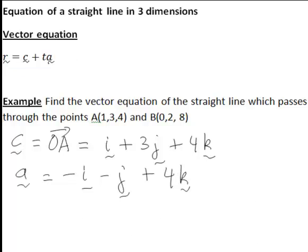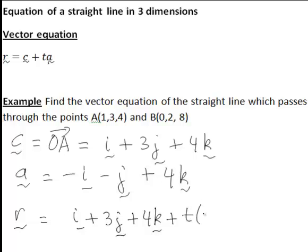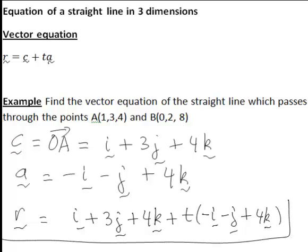Therefore, putting all of this together, the equation of our straight line r is going to be c, which is i plus 3j plus 4k, plus t times a, which is t times negative i minus j plus 4k, where different values of t give different points on the line.